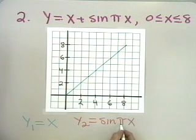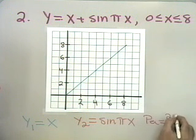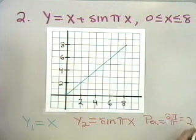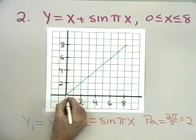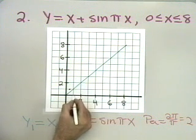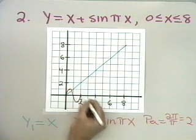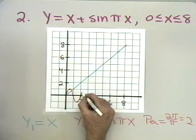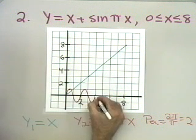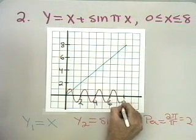y2 is equal to sin(πx). This has a period of 2π divided by π, which is 2. So it's a regular sine curve with an amplitude of 1 that completes one full cycle between 0 and 2, another between 2 and 4, and so on. It starts at 0, goes up to 1, back down to 0, down to negative 1, and back up. It continues in that same manner, going through four complete cycles.